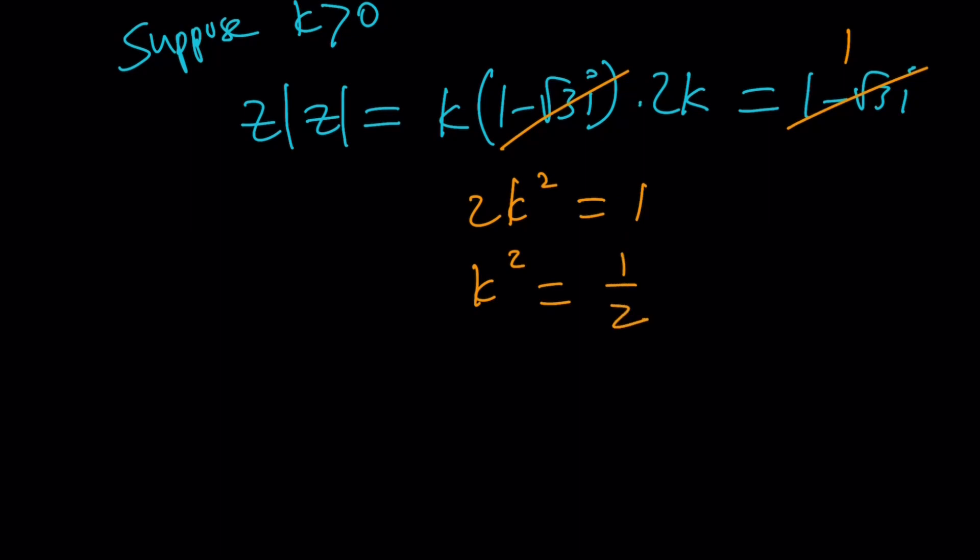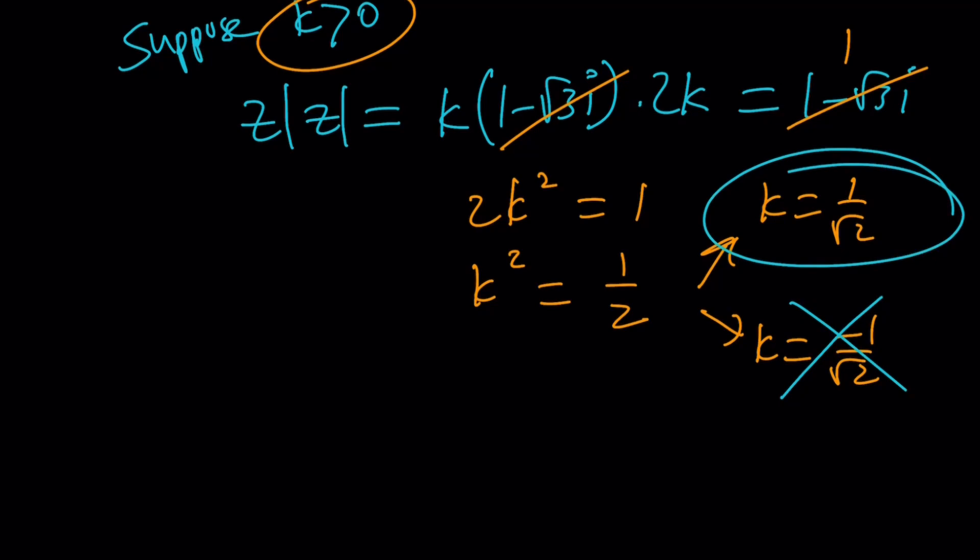So, from here, there are two k values. k is either 1 over root 2 or negative 1 over root. Wait a minute. Didn't you say k if k is positive? Yes. So, we have to discard the bad one, the negative one. So, we're going to take this. All good, right?